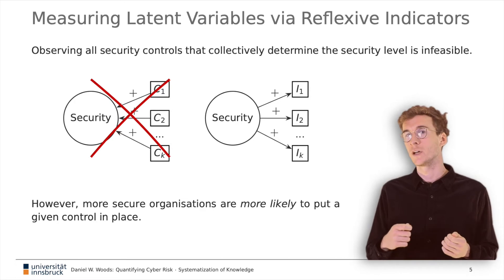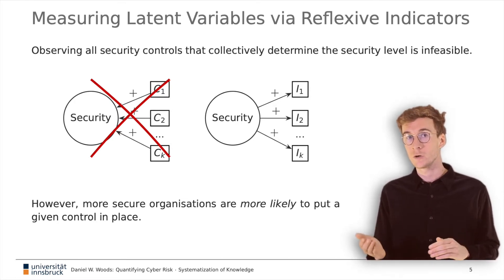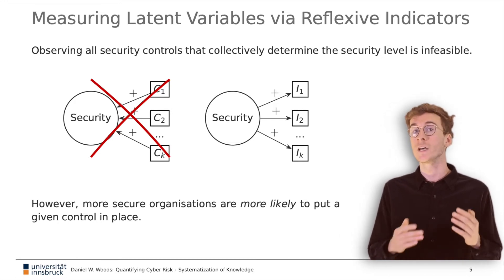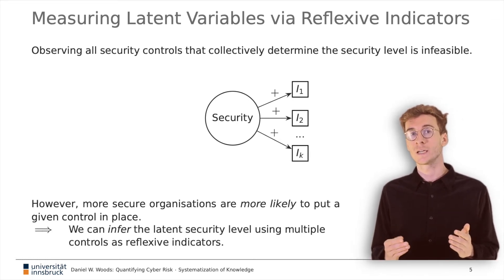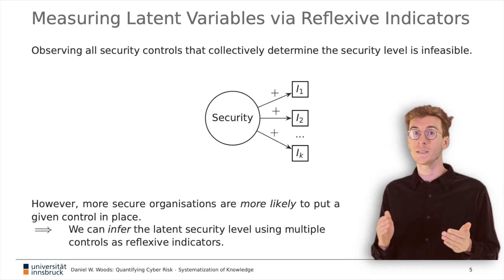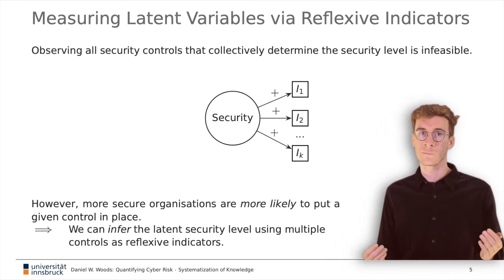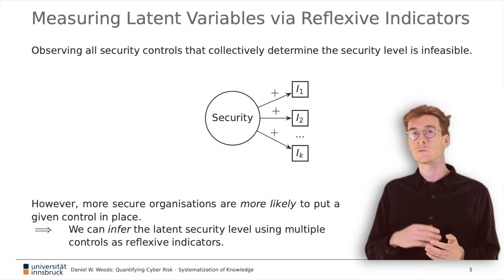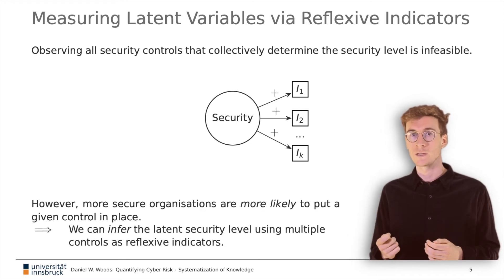Such relationships are noisy. A given security control may be implemented by an insecure organisation, while also not being implemented by an otherwise secure organisation. This statistical noise can be overcome by making many measurements and aggregating the results — the more measurements, the better. In the language of structural equation modelling, the measurement of each control is a reflexive indicator of the latent variable, namely the security level.